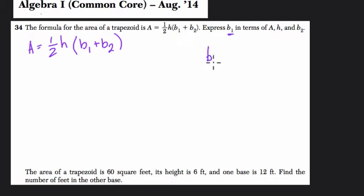So B sub 1, this 1 right here just refers to the first B or first base, and they want us to get a formula for B1 in terms of all the other variables here in some order. So we're isolating B1, we're solving for it.